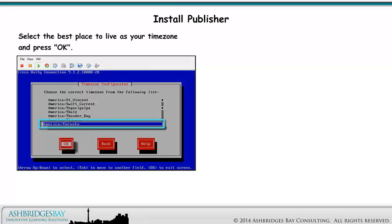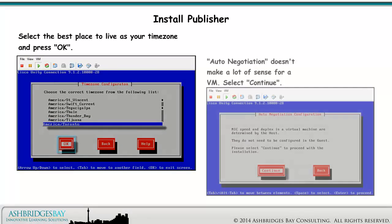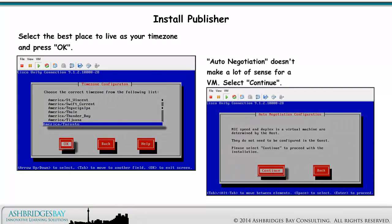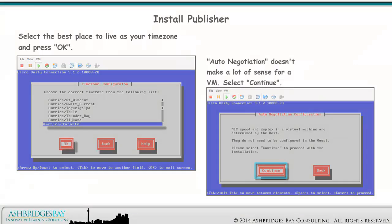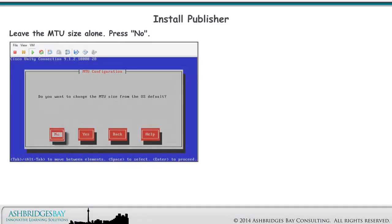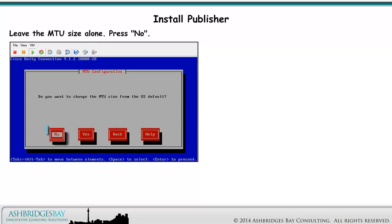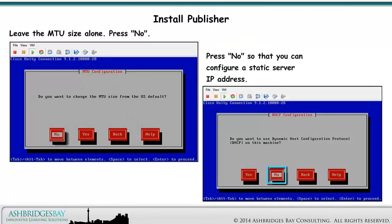Select the best time zone for your location and press OK. Auto-negotiation doesn't make a lot of sense for a VM — select Continue. Leave the MTU size alone and press No. Press No so that you can configure a static server IP address.